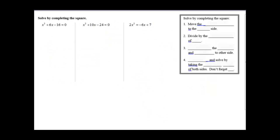How do we solve by completing the square? We take the c term and move it to the other side. So we get x squared plus 6x plus blank equals 16 plus blank — we have two blanks. We need to make the left side a trinomial. Half of the middle term 6 is 3, so this is x plus 3 squared. What is 3 squared? That's 9. Whatever you add to the c, you must add to the other side. So now we have 16 plus 9, which is 25.